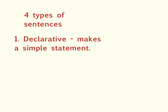The reason we need to know what the four types of sentences are is that when we're writing, we have to know what punctuation to use at the end of our sentences. So if we know that a declarative sentence makes a simple statement, what punctuation do we use at the end of this sentence? If you answered a period, you're correct.